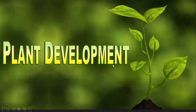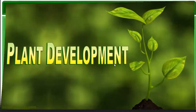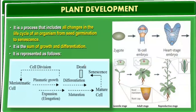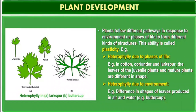Our previous topic was plant development. We studied the definition of development — that it is the sum of growth and differentiation, and all the changes associated with the life cycle of an organism can be represented as development. We also studied the term plasticity, which means different pathways in response to different environmental conditions, resulting in different structures.